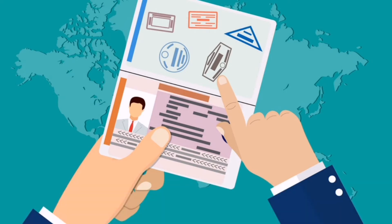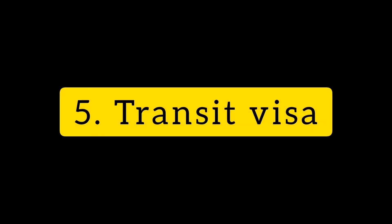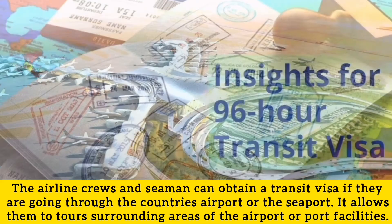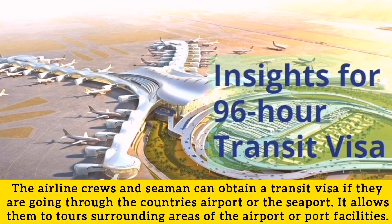Number five: transit visa. Airline crews and seamen can obtain a transit visa if they are passing through a country's airport or seaport. It allows them to tour the surrounding areas of the airport or port facilities.